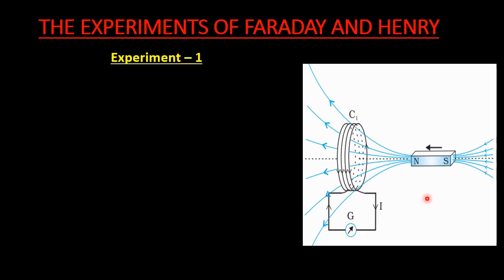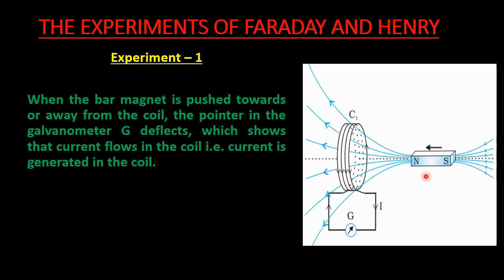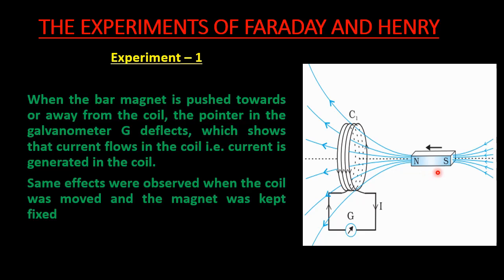They also noticed that the faster you move the bar magnet towards or away from the coil, the greater the current induced and the greater the galvanometer deflection. If the bar magnet is moved slowly, then very small current is induced. The experiment can be summed up as: when the bar magnet is pushed towards or away from the coil, the galvanometer deflects, showing current flows. Also, when the coil was moved while the magnet was fixed, the same effect was observed. In both cases — moving the magnet or moving the coil — the same result was seen.